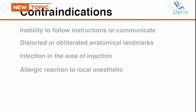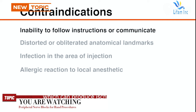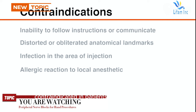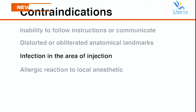Inducing peripheral nerve block for superficial hand laceration is contraindicated in patients who are unable to follow instructions and who are unable to communicate severe pain on injection of local anesthetic. Such pain is an indicator of intraneural injection, which can produce ischemic nerve injury. The administration of an anesthetic is also contraindicated in patients who have distorted or obliterated anatomical landmarks, who have an infection in the proposed area of injection, or who have a history of allergic reaction to the local anesthetic agent.